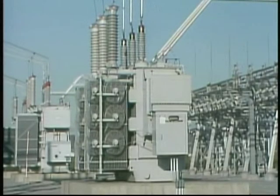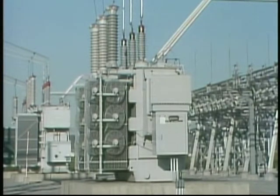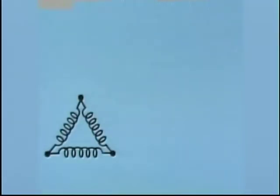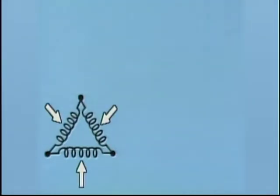The terms delta and Y identify how the windings on the distribution side of a substation transformer are connected together. This is an illustration that represents the winding connections for a substation transformer in a delta system. Each coil represents a separate phase winding in a three-phase substation transformer.